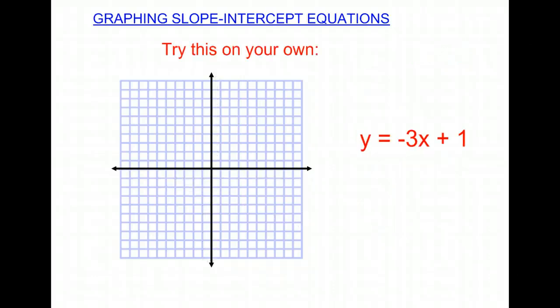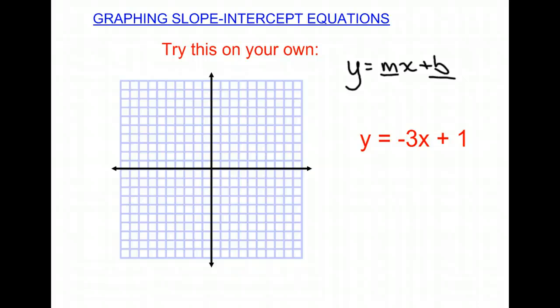I'd like you to try this one on your own: y equals negative 3x plus 1. Remember that you have to first find the slope and then the y-intercept in that equation. Starting at the y-intercept, move according to your slope. Remember to label what you're counting by on your axes — whether it's 1 or 2 or however you decide to do it. Good luck!